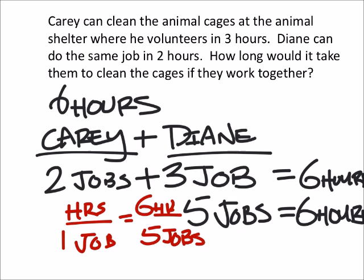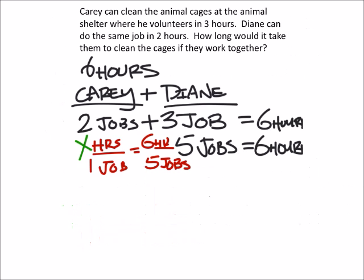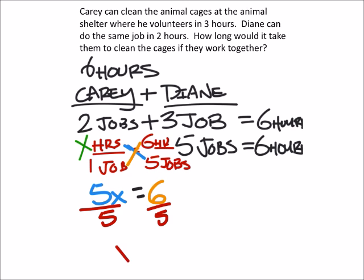I can use the cross multiplication method to solve this — it's a proportion. We have an X right there, so you could use cross multiplication. From this cross I would have five X, and that would equal this other cross, which would be six times one, which is six. X is the number of hours for one job. To solve for X, I would just divide by five, and I get X equals six fifths hours.